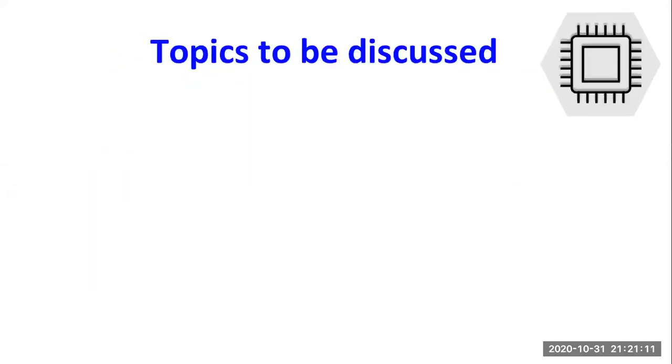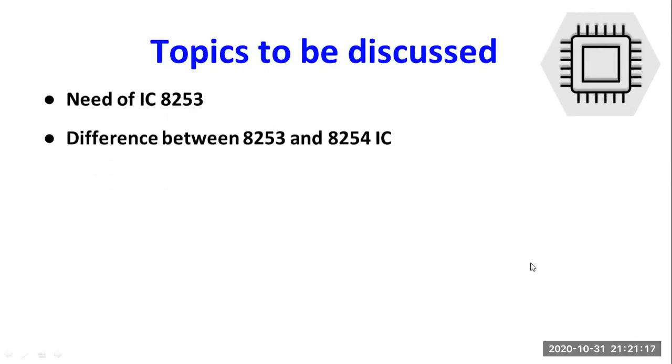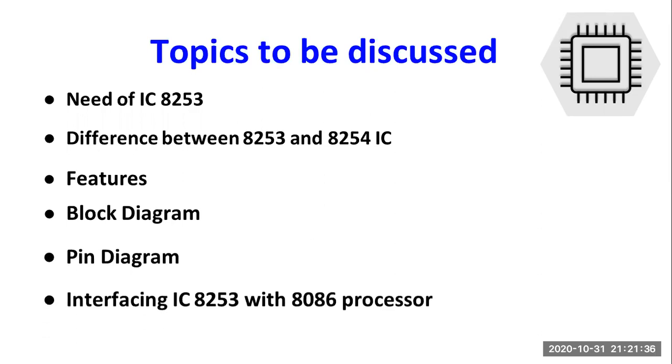The topics of discussion for this video would be: Why do we require this IC on the system? What is the difference between 8253 and 8254 IC, wherein both are programmable interval timers? What are the features of this IC? What is the internal block diagram as well as the pin diagram of this IC? And how do we interface 8253 IC with 8086 processor?